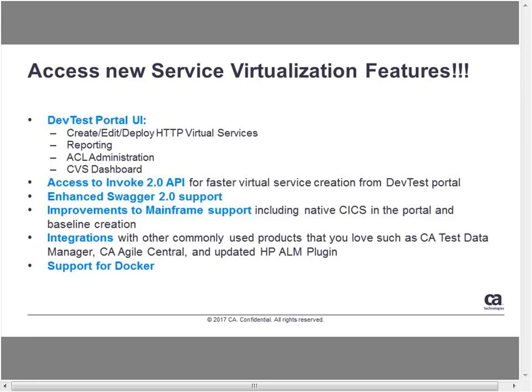The first major new feature is the DevTest Portal UI. Previously we had the workstation to create and run virtual services, and the DevTest console for reporting. As of version 9X, there is no support for the DevTest console and server console — those were replaced by the DevTest portal. The DevTest portal enables you to create, edit, and deploy virtual services. There's also a reporting console, ACL administration, and a CVS dashboard — all based on the new AngularJS technology. It's a new, slick UI.